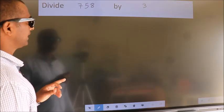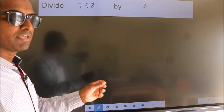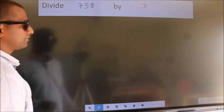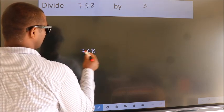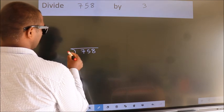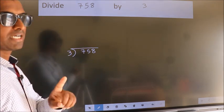Divide 758 by 3. To do this division, we should frame it in this way. 758 here, 3 here. This is your step 1.